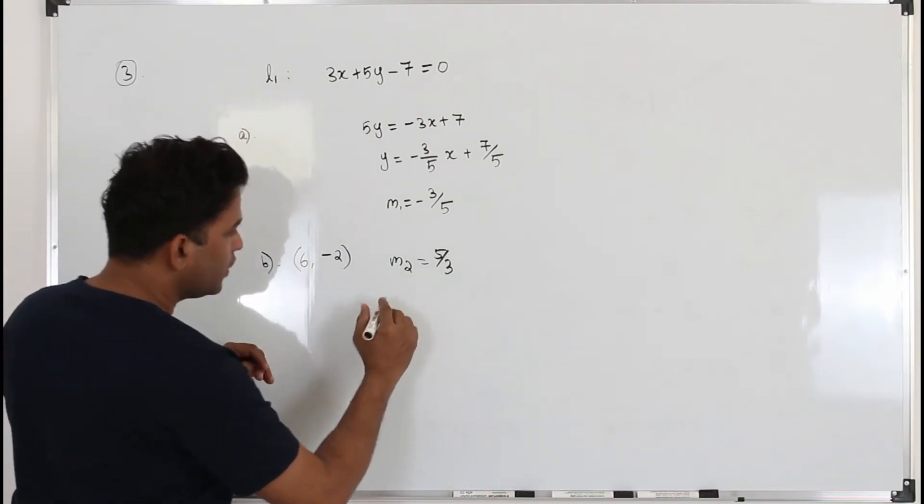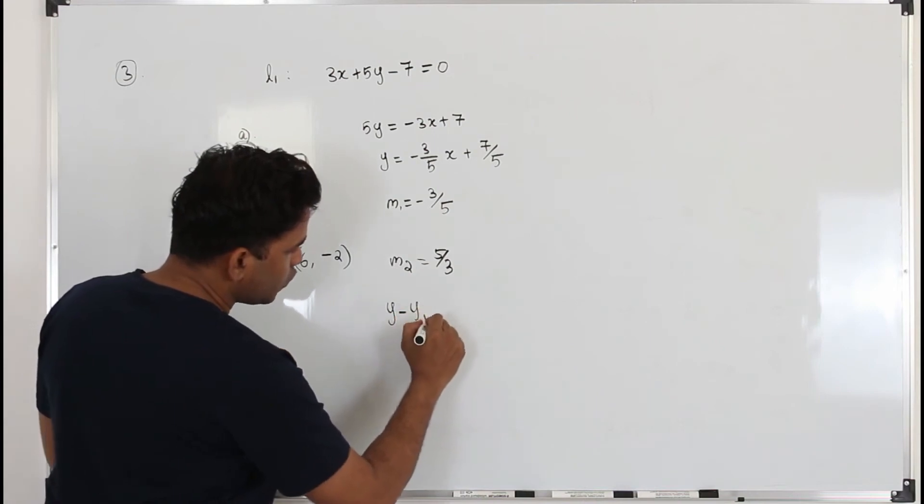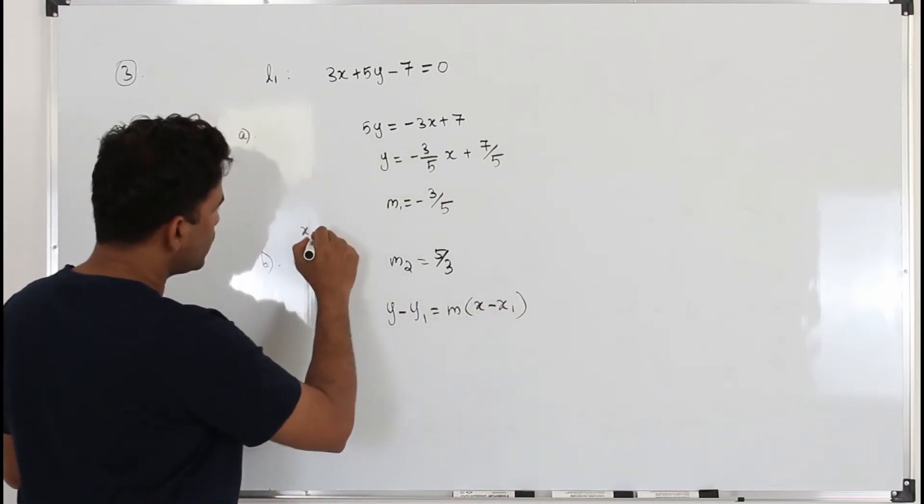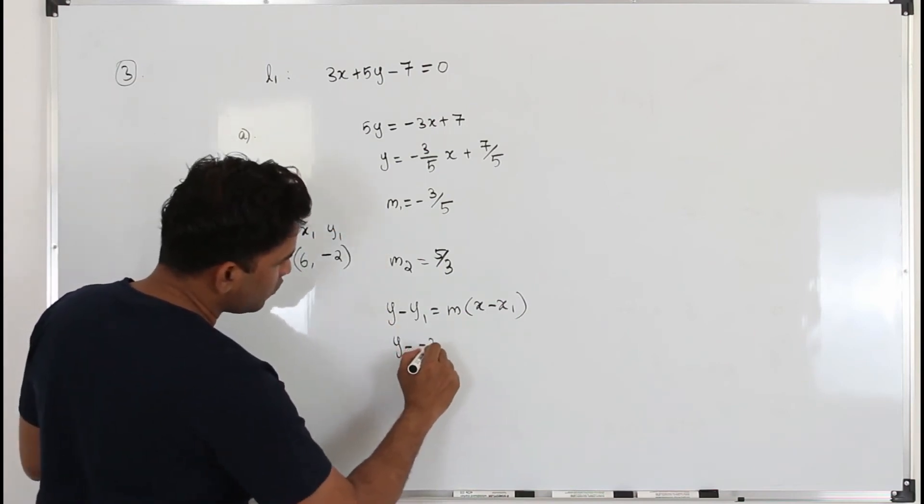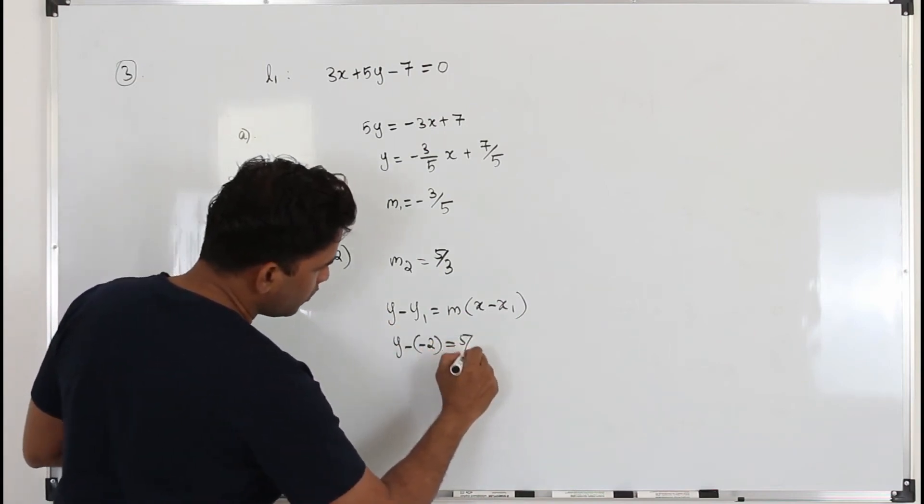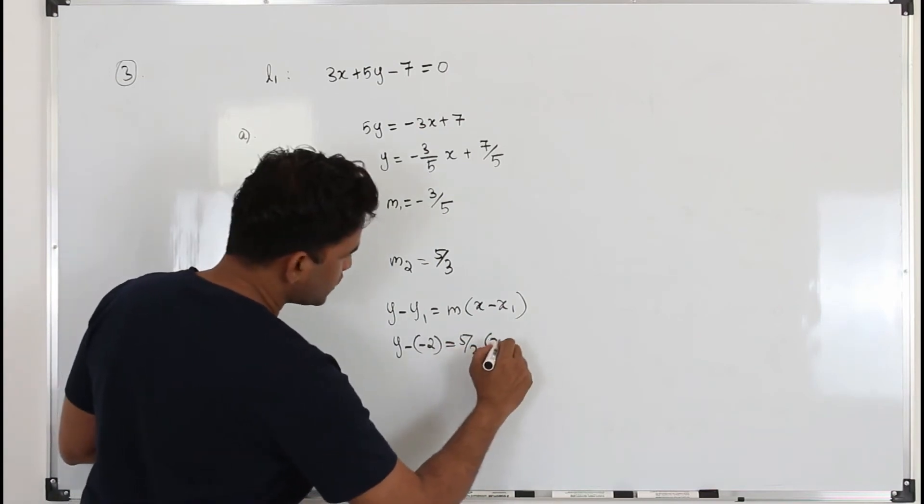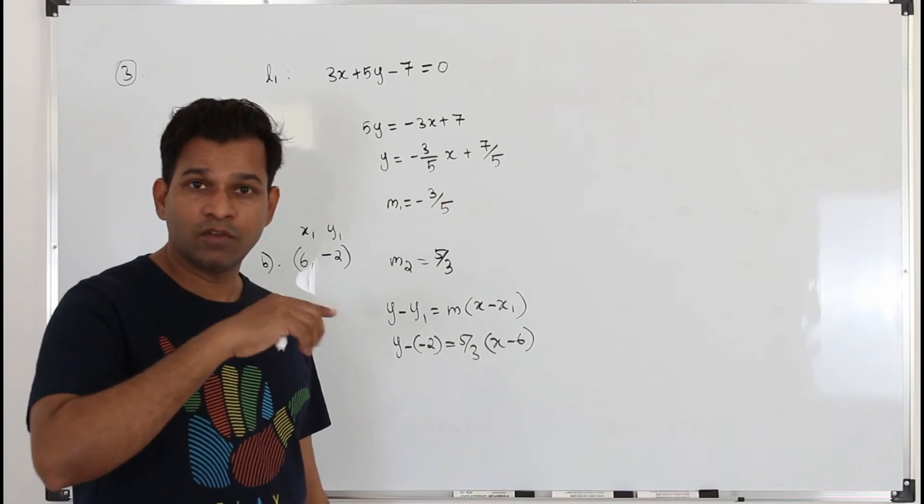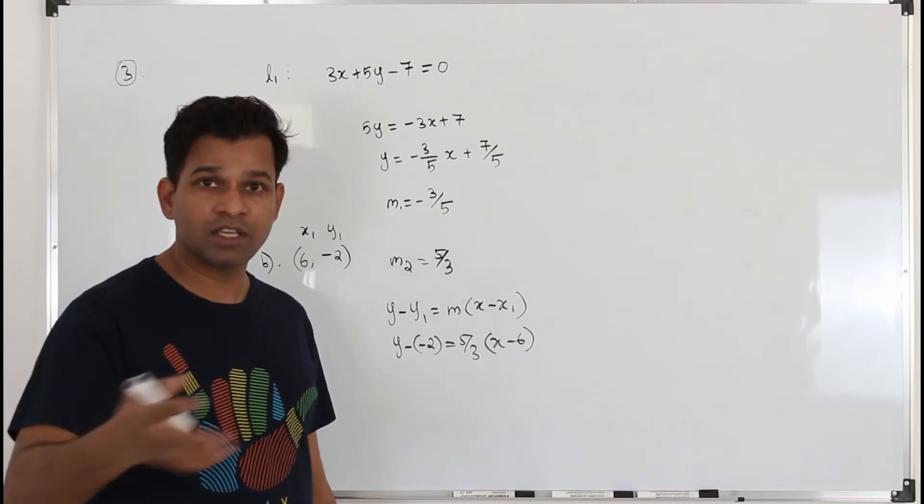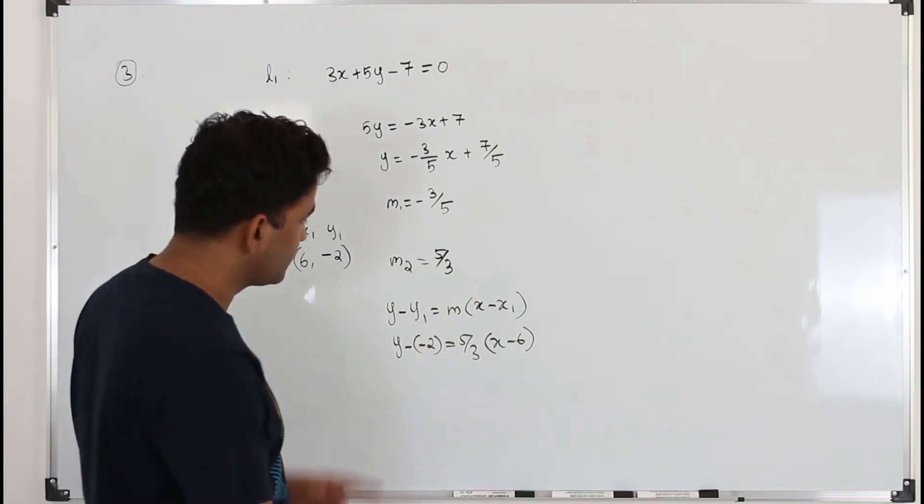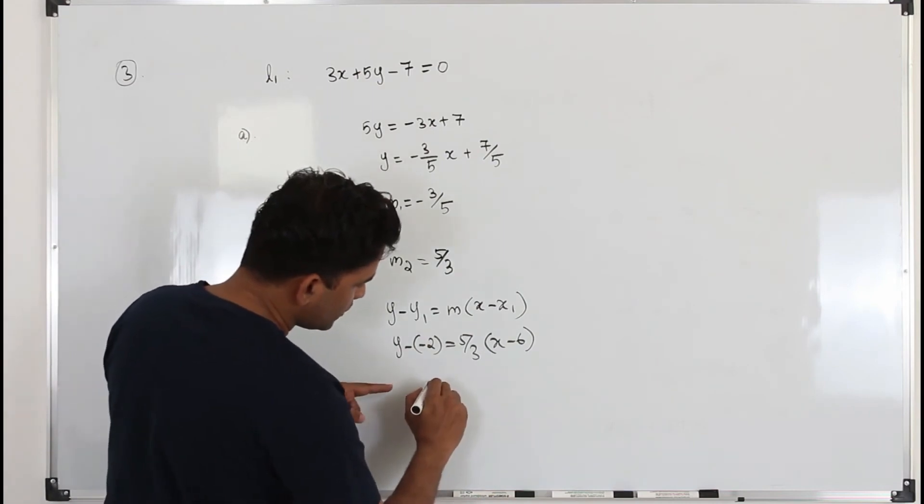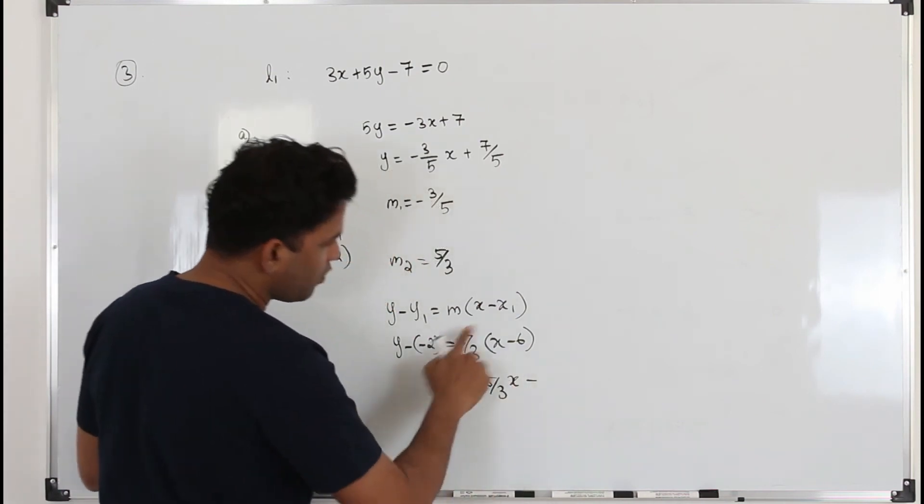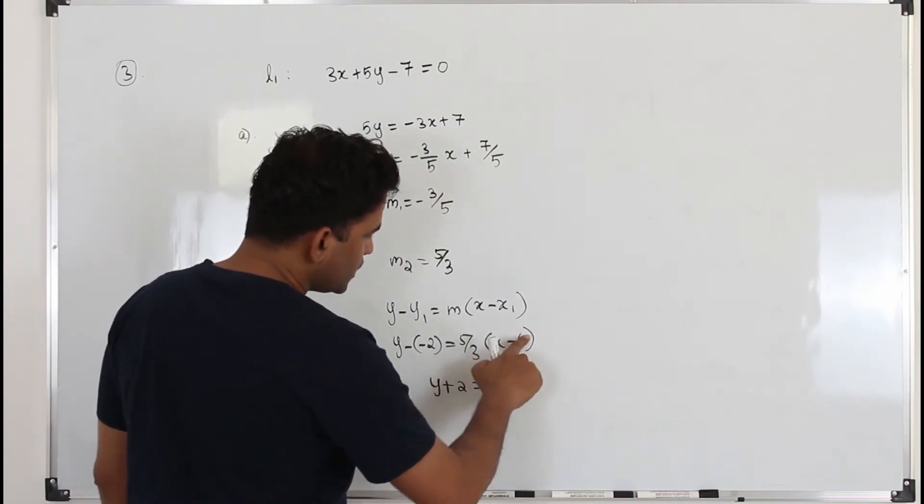We have a slope and a point. You can write the equation as y minus y1 is slope times x minus x1. Take it as x1 and y1. So y minus negative 2 equals slope times x minus 6. Here we are going to find the equation in the form y equals mx plus c, because that's what the question says. So make y as a subject.